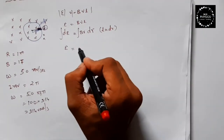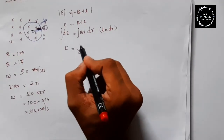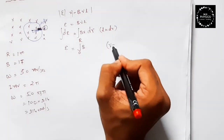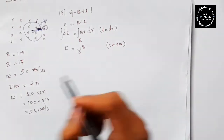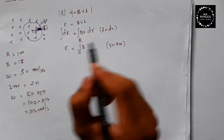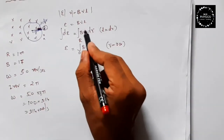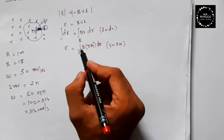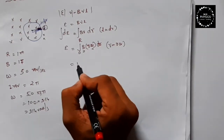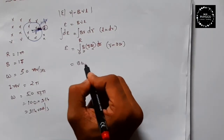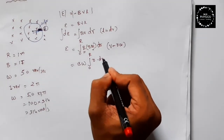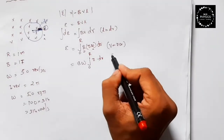To integrate, the limits go from 0 to r. Here, v is equal to r·ω (since each element at distance r has tangential velocity rω). Since B and ω are constants, we take them outside the integral, giving: epsilon = B·ω · ∫₀ʳ r dr.